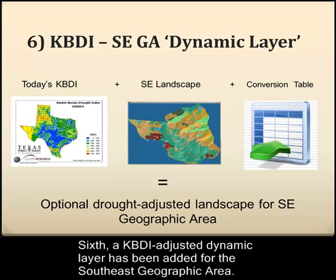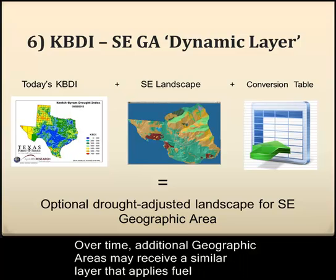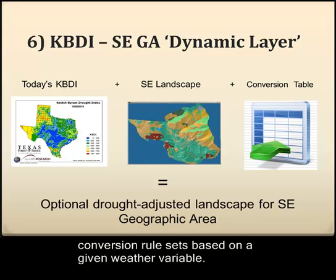Sixth, a KBDI adjusted dynamic layer has been added for the Southeast geographic area. Over time, additional geographic areas may receive a similar layer that applies fuel conversion rule sets based on a given weather variable.